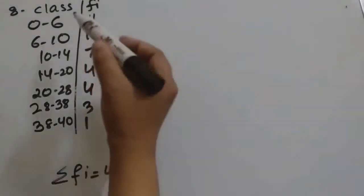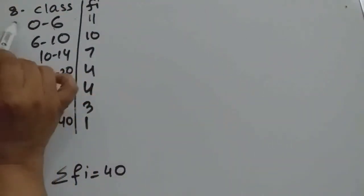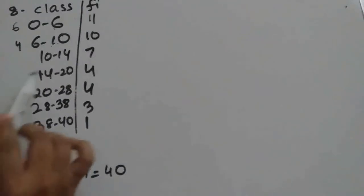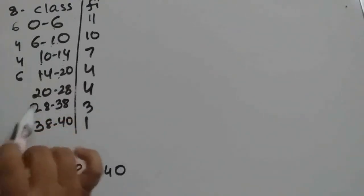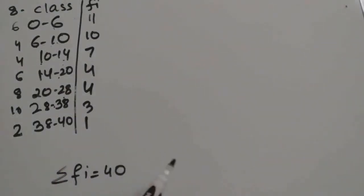If you observe here, classes 0 to 6, so class size for the first class is 6. For the second class it is different: 10 minus 6 equals 4. For the third class, 14 minus 10 means 4. For the fourth one it is 6, then for the next one it is 8, then 10, and then 2. So here class size is not constant, it is changing.